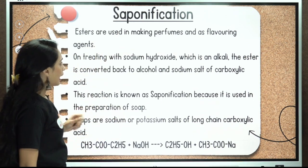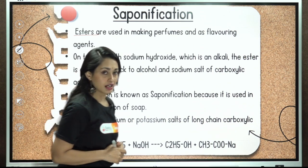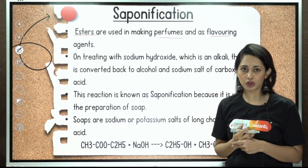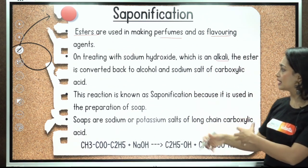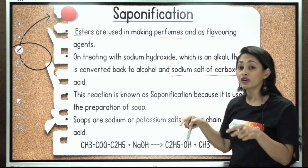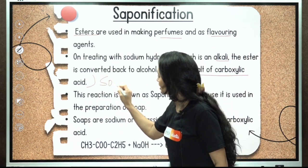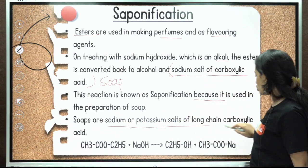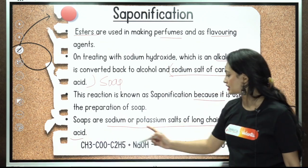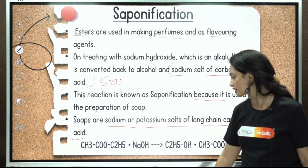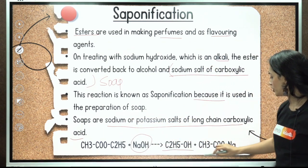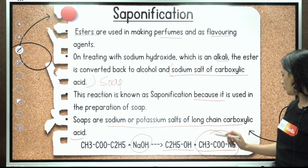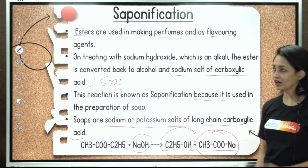Saponification: this is the preparation of soap. Esters are used in making perfumes and as flavoring agents because they are sweet-smelling substances. On treating an ester with sodium hydroxide (an alkali), the ester is converted back to alcohol and the sodium salt of a carboxylic acid. That sodium or potassium salt of carboxylic acid is soap. The reaction is: CH3COOC2H5 + NaOH → C2H5OH + CH3COONa. We get ethanol and sodium ethanoate (sodium salt of carboxylic acid). This is the saponification reaction.